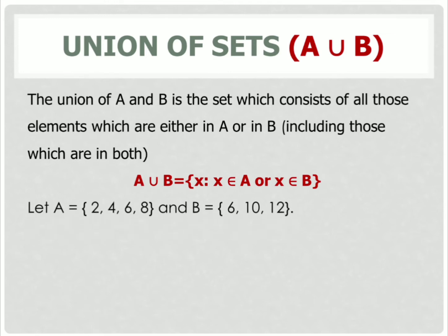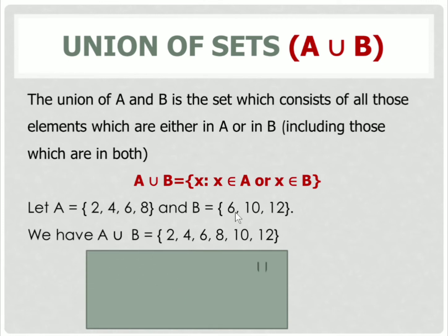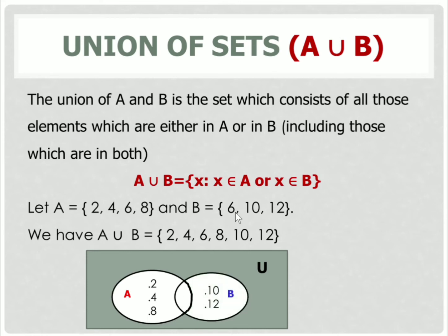Take an example. If A = {2, 4, 6, 8} and B = {6, 10, 12}, then A ∪ B = {2, 4, 6, 8, 10, 12}. You can see 6 is common in A and B. To draw the Venn diagram, we take a universal set U and two circles A and B. A contains {2, 4, 8} and B contains {10, 12}, and 6 is common in both, so we draw the circles overlapping each other, with 6 written in the overlapping portion.